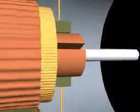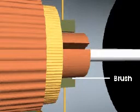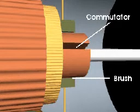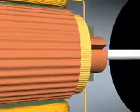Current flows through a wire to a block of graphite called a brush. The brush transmits current to the commutator, which consists of two or more semicircular split rings.